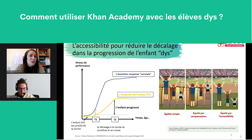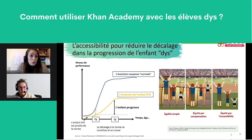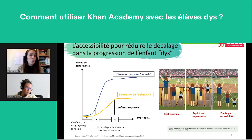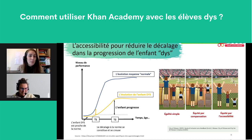La synthèse vocale est un exemple d'équité par l'accessibilité — on permet à tout le monde de l'utiliser, mais ceux qui en ont besoin l'utilisent, et ceux qui n'en ont pas besoin ne l'utilisent pas. C'est comme la police Arial 14 dans tous les documents : les normo-apprenants ne sont pas gênés, mais pour les DYS c'est nécessaire et il n'y a pas de différence visible avec les autres élèves. C'est l'enseignement idéaliste dans lequel il serait chouette de se trouver.